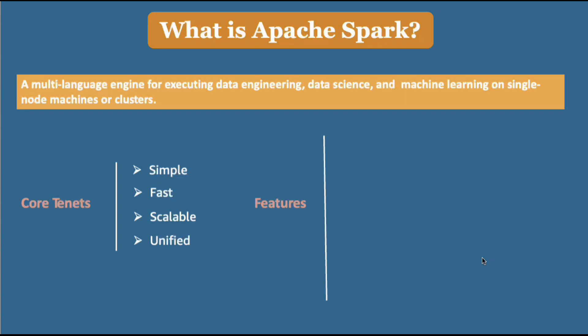Now let us understand the key features of Spark. The first one is batch and streaming data. Spark unifies the processing of data in batches as well as real-time streaming use cases. You can leverage your preferred languages — Python, SQL, Scala, Java, or R — for both batch and streaming workloads.